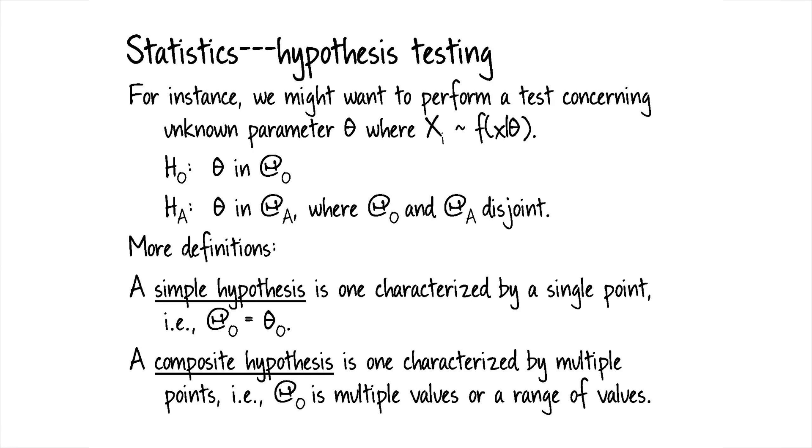And the alternative hypothesis we specify as theta being in some other parameter space, capital theta sub a, where theta naught and theta a, capital theta naught and capital theta a are disjoint. So you can't have overlap in the null hypothesis and the alternative hypothesis.